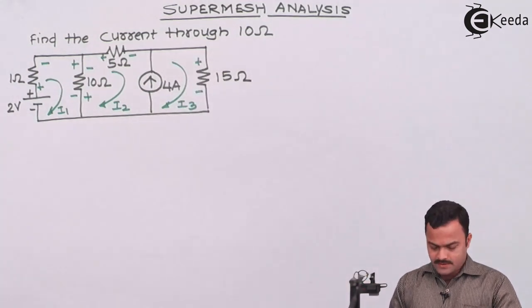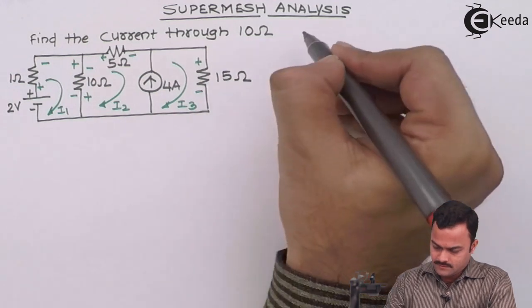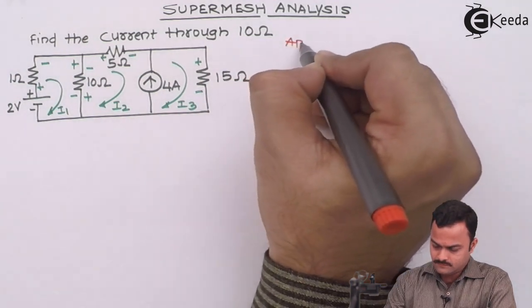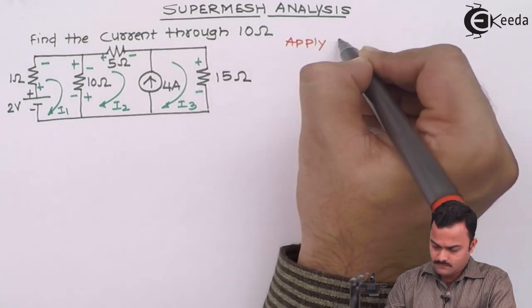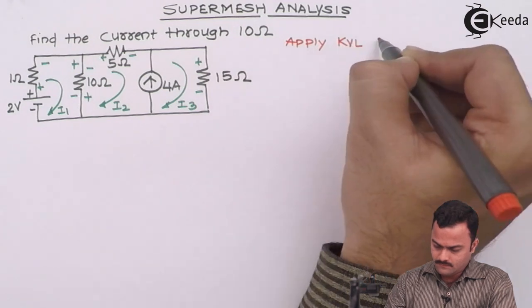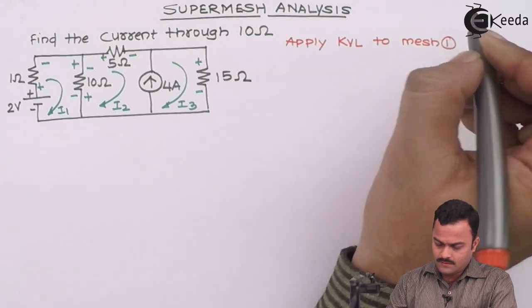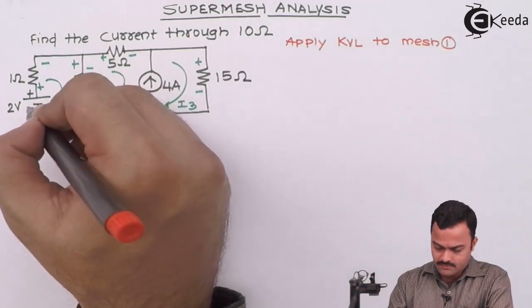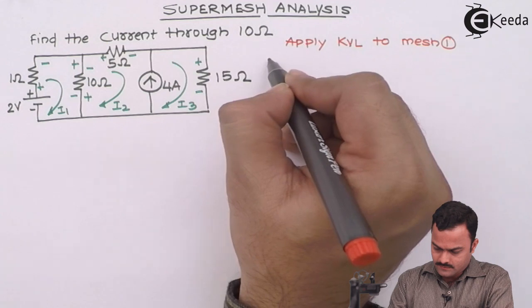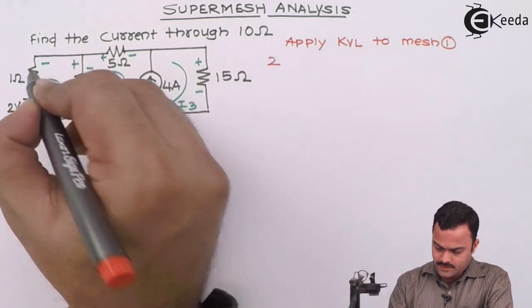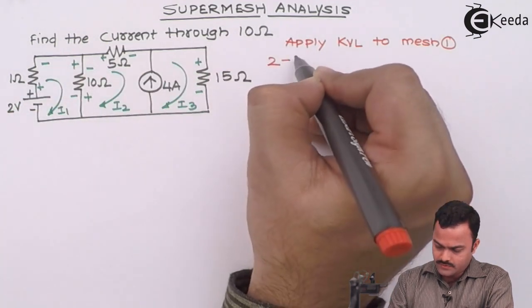Now let's apply KVL to mesh 1. Let's start from the voltage source, minus plus. So it's a plus 2, plus minus, minus 1 into I1, so it's minus I1.